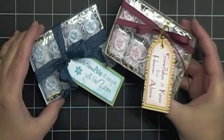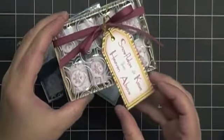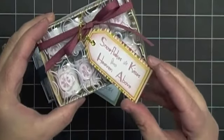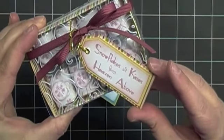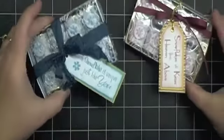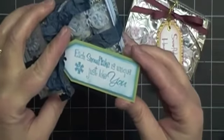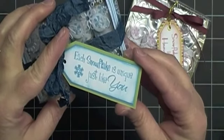There's two cute phrases on these nugget boxes that are from my Snowman's Prayer stamp set. This one says, Snowflakes are kisses from heaven above. This one reads, Each snowflake is unique, just like you.